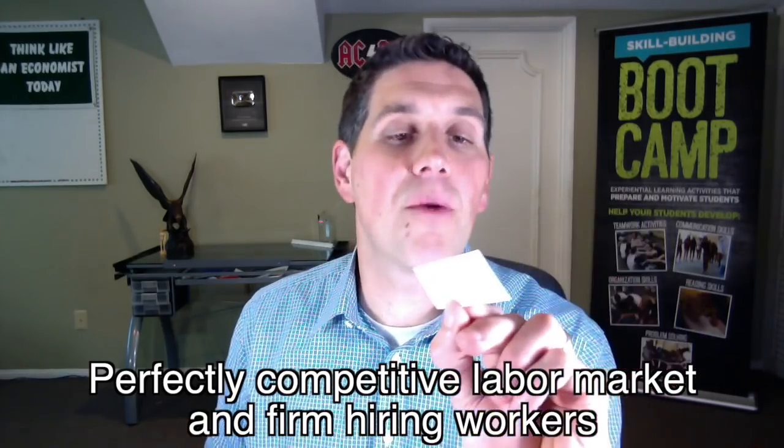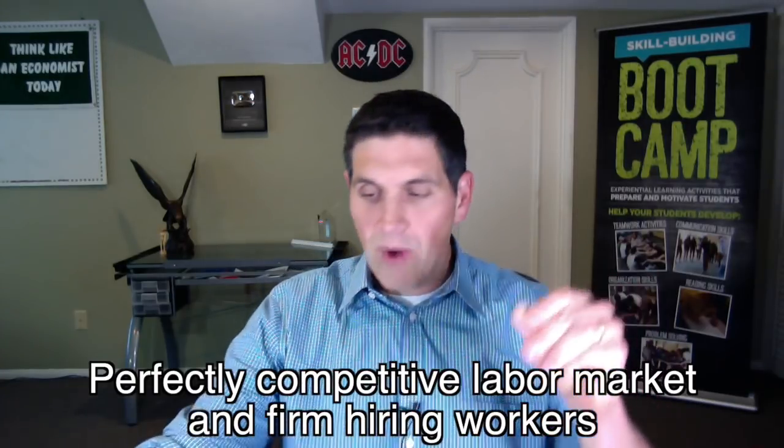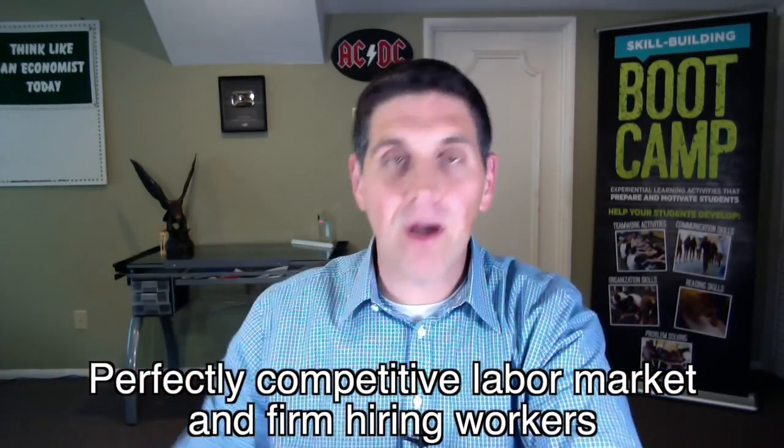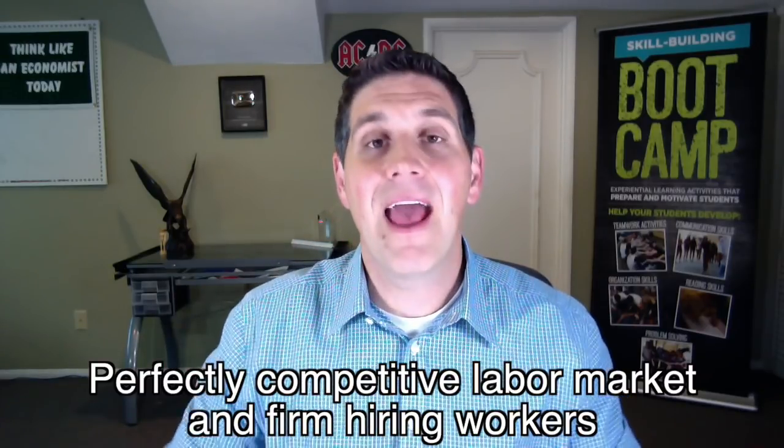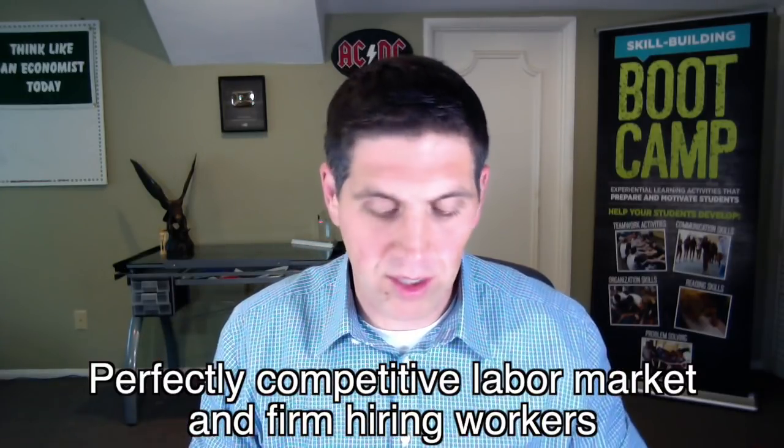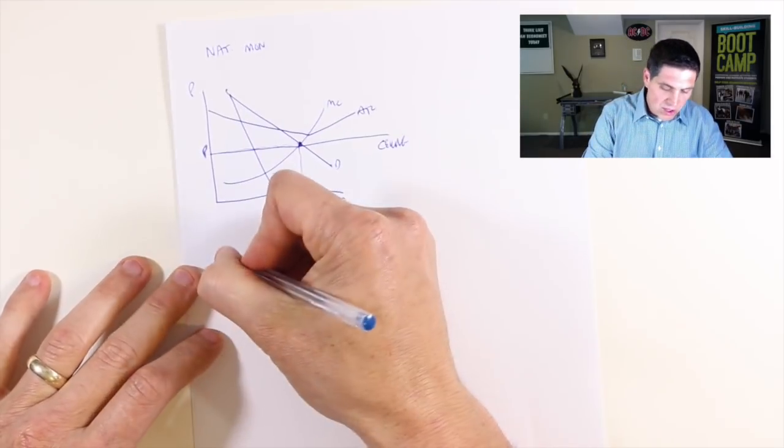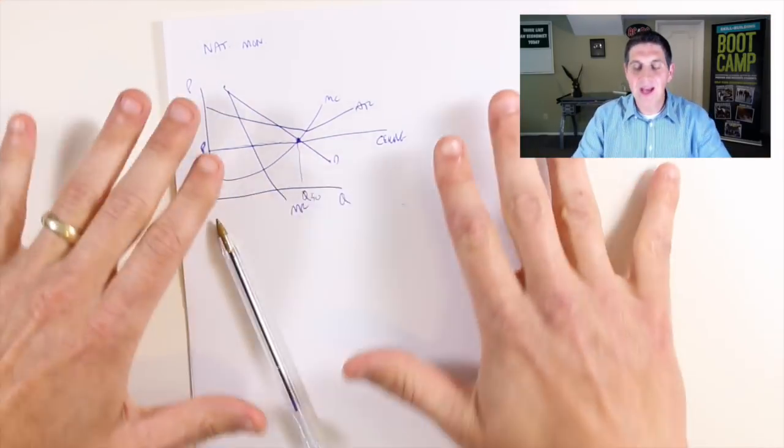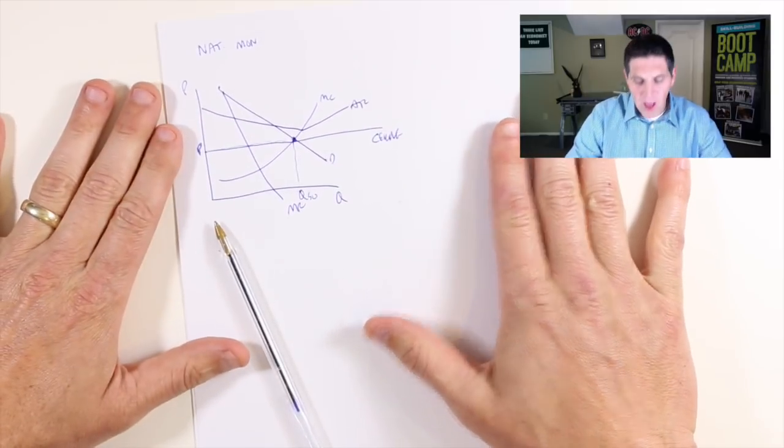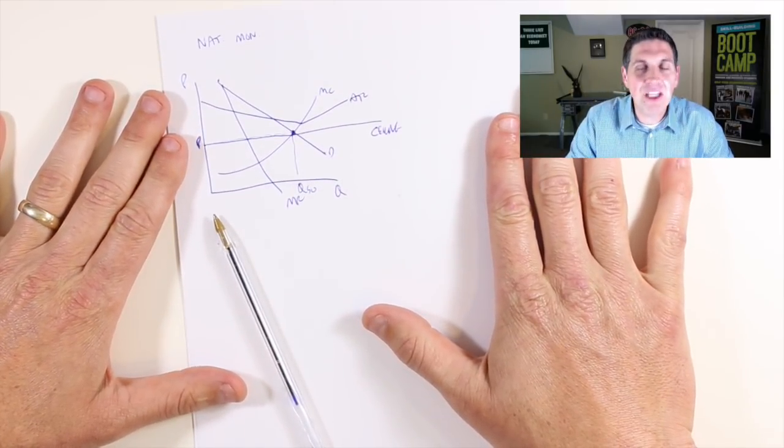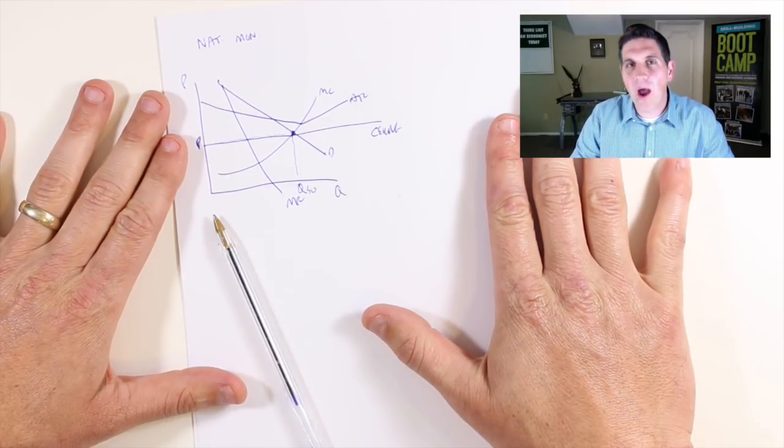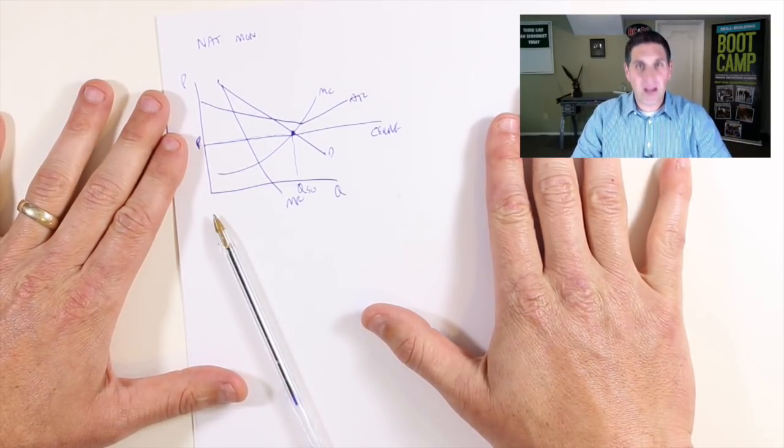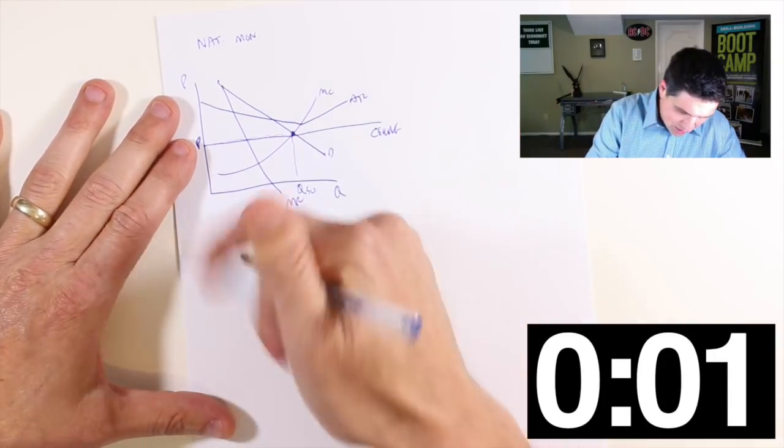Maybe we'll go for an easier one because that was probably pretty tricky. Perfectly competitive market and firm in the labor market. So labor market and firm hiring workers in that market. Two graphs side by side and we're talking about this idea of hiring workers, not producing products. We're racing. Here we go. Side by side graphs. Perfect competition. Resource market and a firm. Make sure to show me the wage and the quantity for both the market and the firm. On your marks, get set, go.